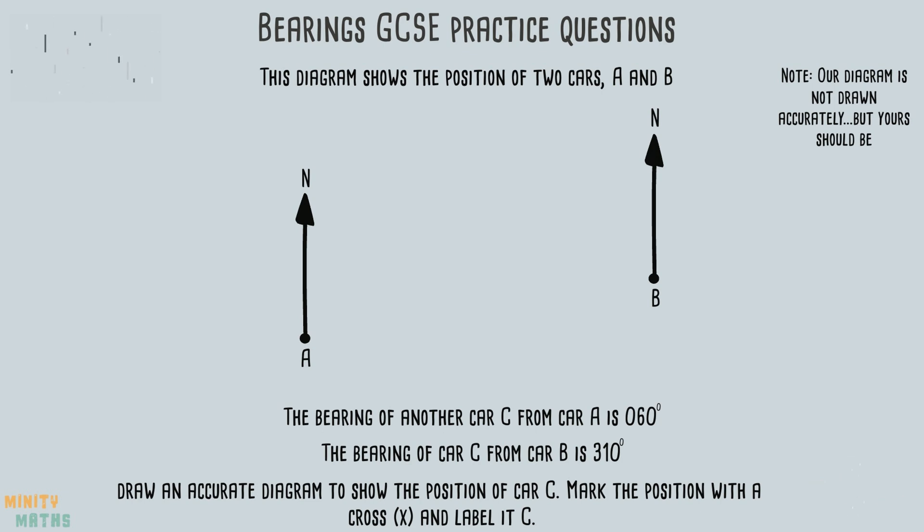Let's use the information given in the first sentence to draw a line from car A to where car C could be. First we should use our protractor to measure an angle of 60 degrees clockwise from the north line of car A. From this point, draw a line and extend as far as you can. We know the car will be somewhere along this line, but we can't be sure just yet exactly what point on the line the car will be.